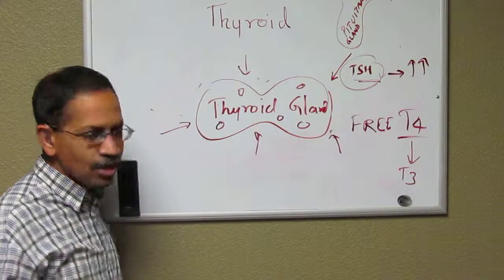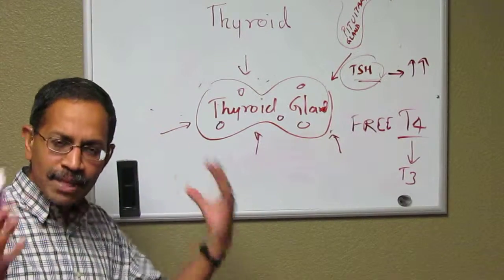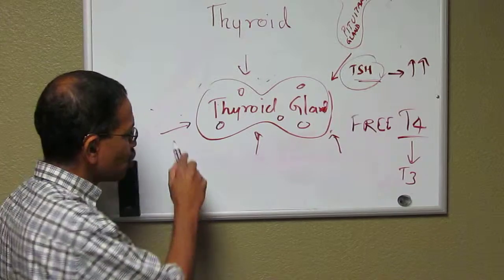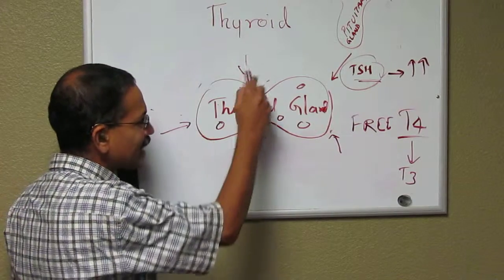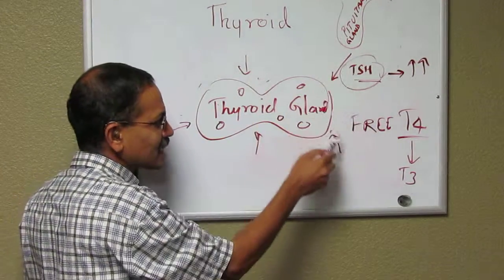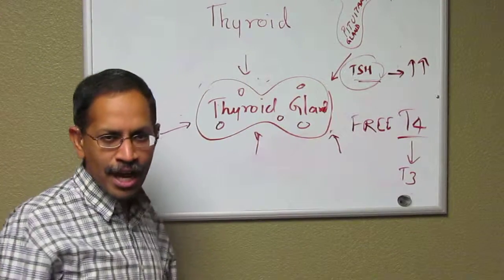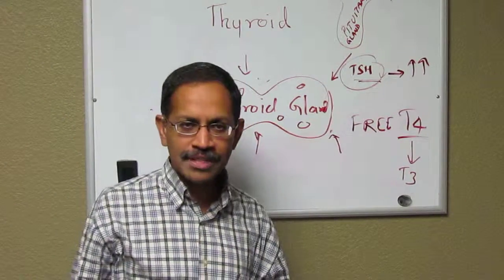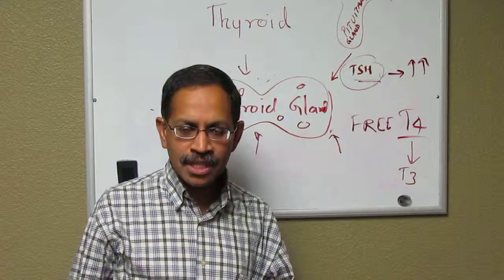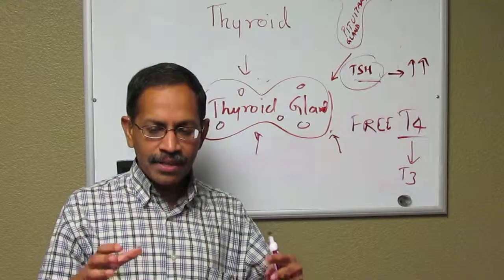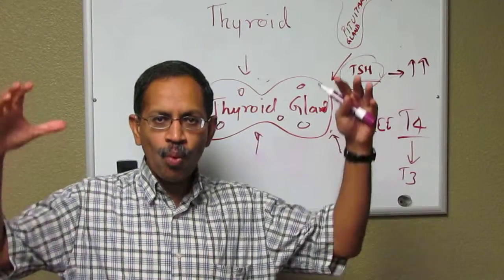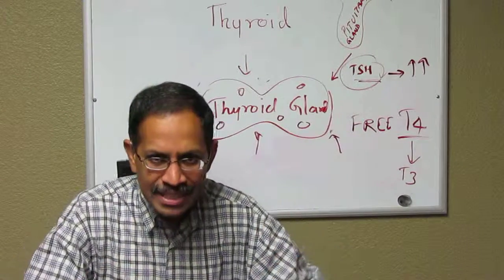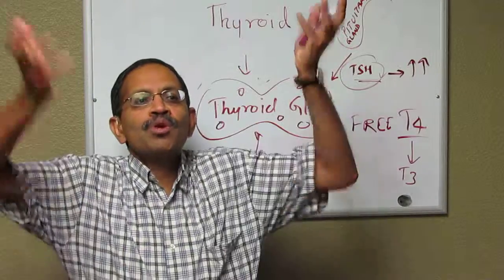With a hyper-functioning thyroid gland, the principle is essentially the same — your gland gets attacked by thyroid antibodies. But the interesting thing about these antibodies is, instead of making the thyroid gland work less, it makes the thyroid gland work more.